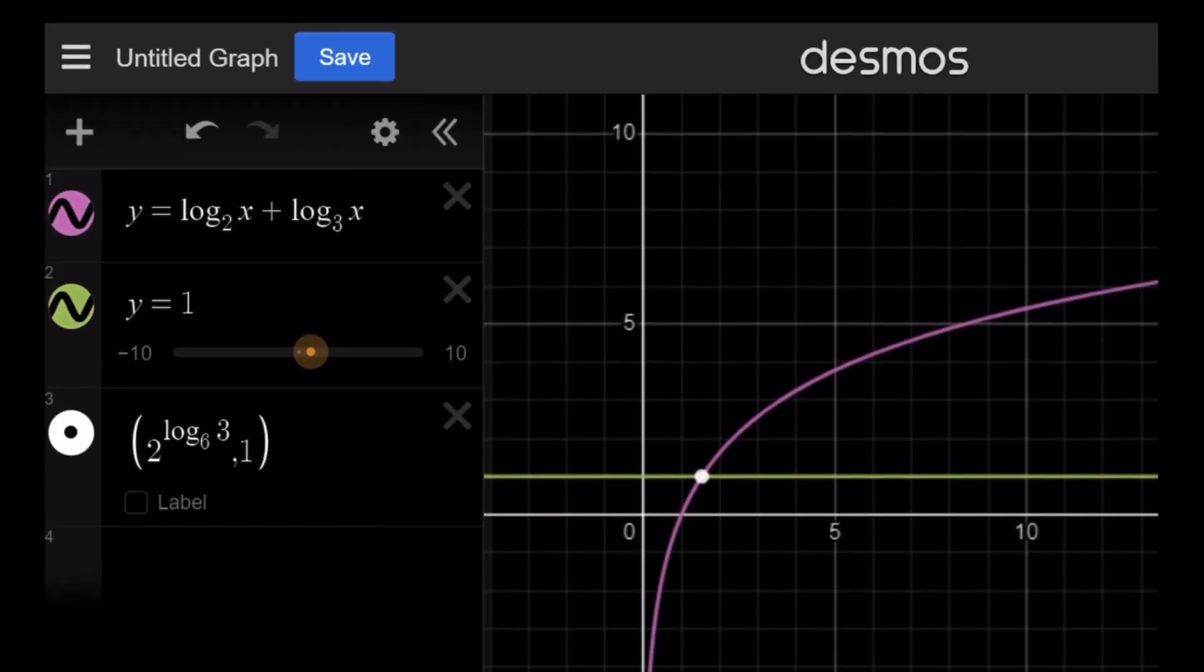Let's take a look at the graph. Here's a graph of y equals log x base 2 plus log x base 3. It just looks like a normal log. And y equals 1, because this was equal to 1 originally. This is the intersection point, the abscissa, such a different word for x-coordinate.